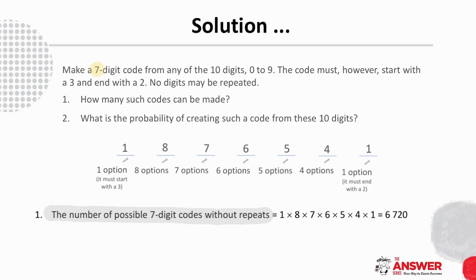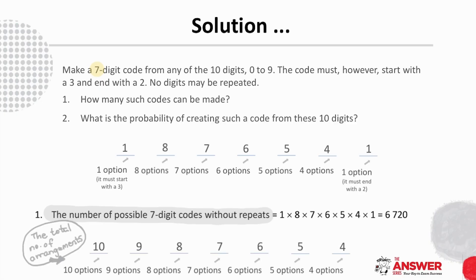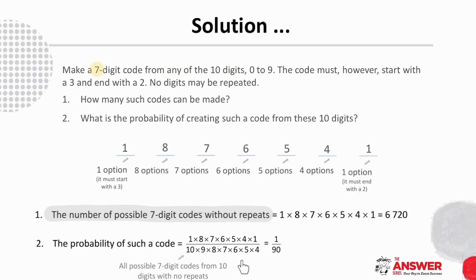Next, we have to find the probability of such a code occurring. To calculate the probability, we need the total number of seven-digit codes from the ten digits with no repeats for the denominator, which is ten times nine times eight times seven times six times five times four. The probability of such a code is therefore 6720 over this total, which simplifies to one over ninety.